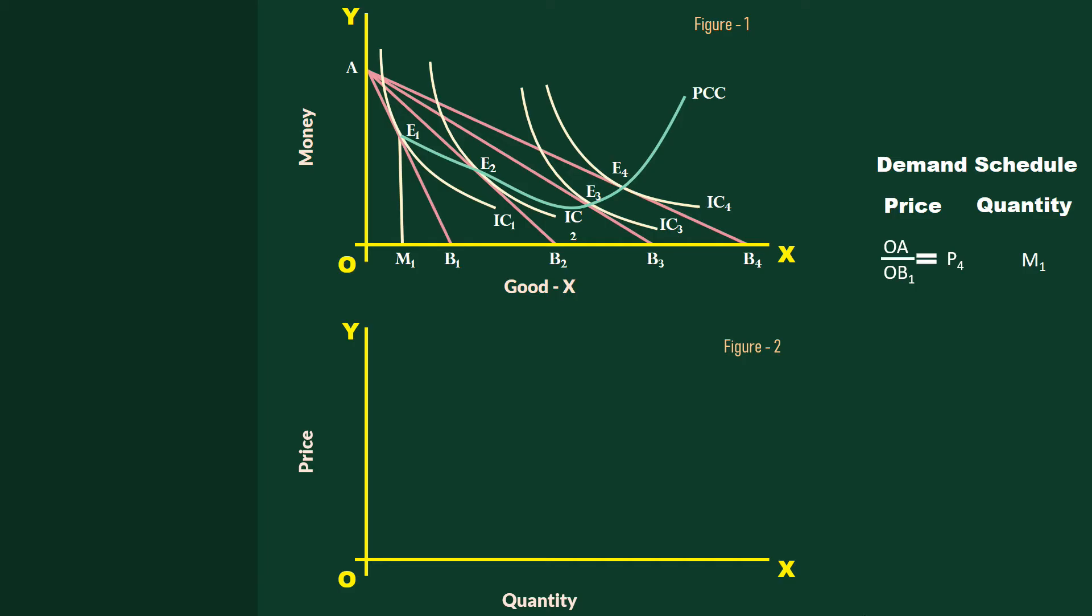This graph is exactly below the first one. Price is measured along the Y axis, and quantity is measured along the X axis. C represents the point M1, P4. This is one of the points on the demand curve.